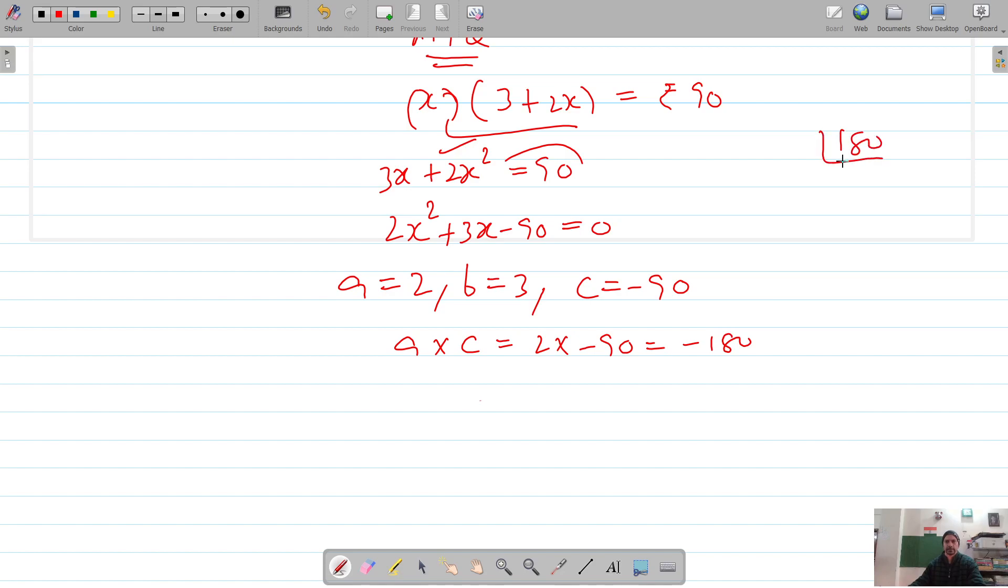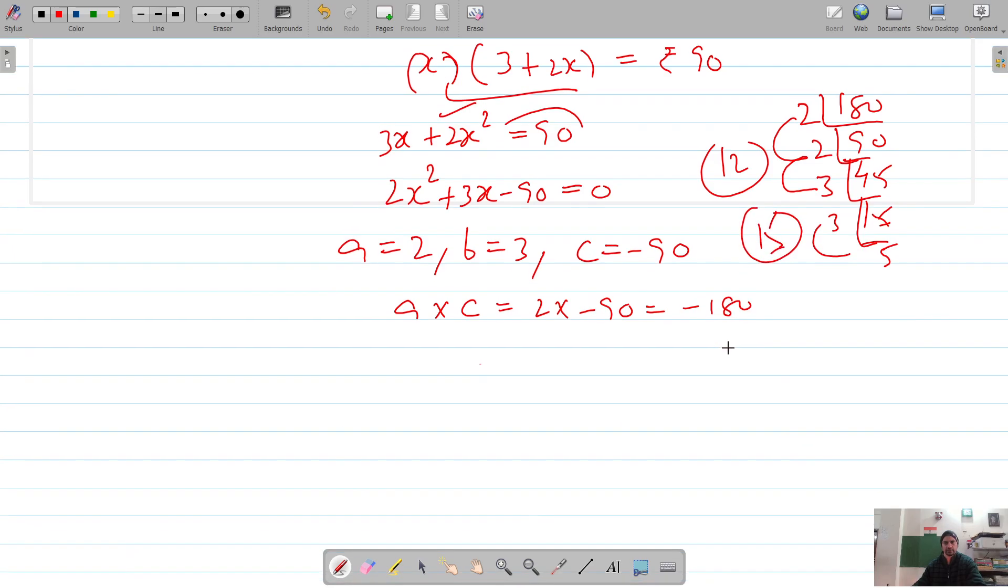Find the factors of 180 so that we can get 3 as the sum. It's 2, 90, 2, 45, 3, 15, and 3, 5. Factors of 180: 2, 4, 4, 12, 12 and 15.